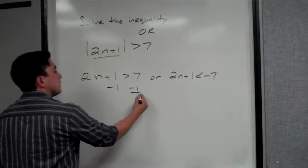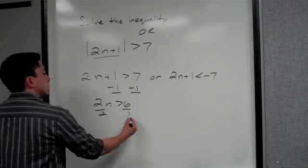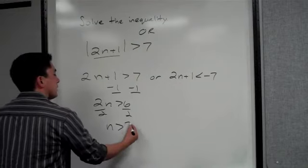So now, subtract 1, we have 2n is greater than 6, divided by 2, n is greater than 3.